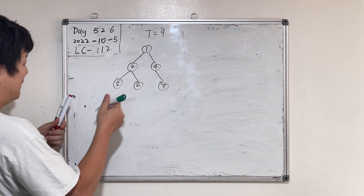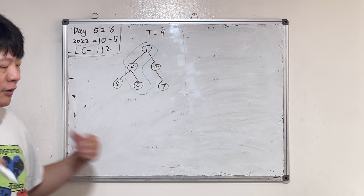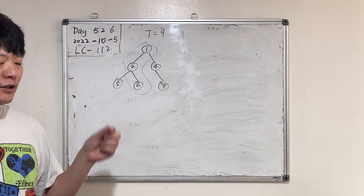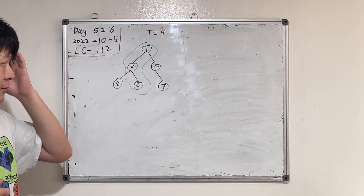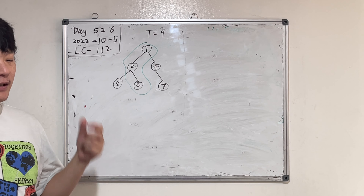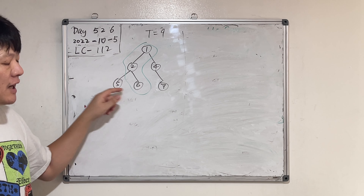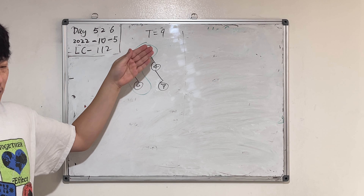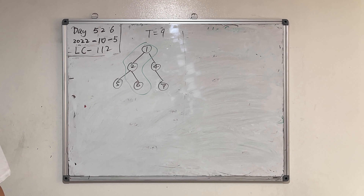Is that 1 + 2 + 6 = 9? Exactly! Now let me rephrase: we're given a binary tree where each node contains an integer — positive or negative — and a target. The task is to find out if it's possible to traverse from the root to any leaf node such that the sum of the nodes we visited equals the target.